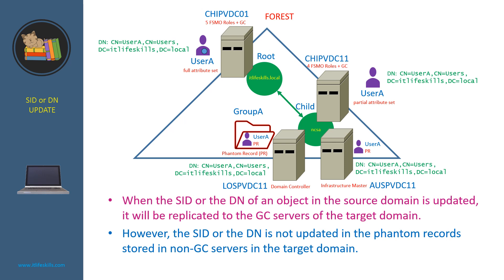When the security ID or the distinguished name of an object in the source domain is updated, it will be replicated to the global catalog servers of the target domain. However, the security ID or the distinguished name is not updated in the phantom records stored in non-global catalog servers in the target domain.